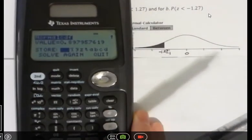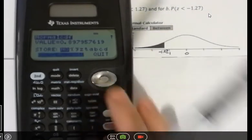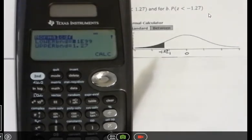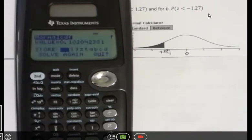I can do the same thing again. I can just go down to solve again here. And then the only thing I'm going to do different here is when I get to my upper bound, instead of being positive 1.27, it's going to be negative 1.27. And then I'll hit enter and enter again. And that gives me a value of 0.1020.